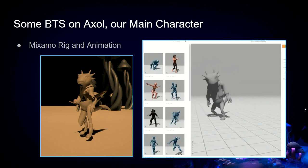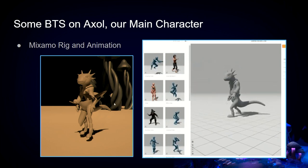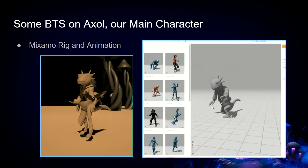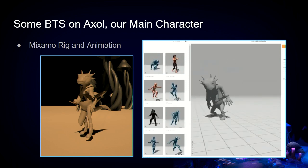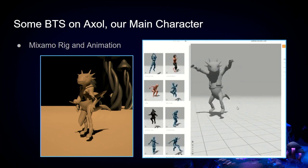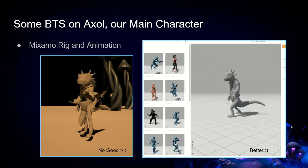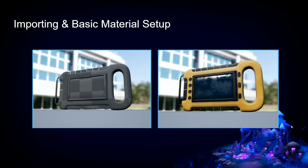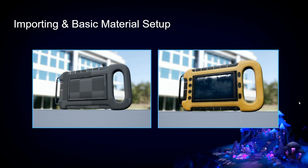A couple of things behind the scenes: first, I had to animate Axel. I am no rigger or animator, so I went to Mixamo for automatic rigs. We gave him some animations — specifically running, idling, and jumping. Next, I took Ian's models and brought them into Unreal and gave them the textures he created in Substance Painter. Let's go ahead and do that together.